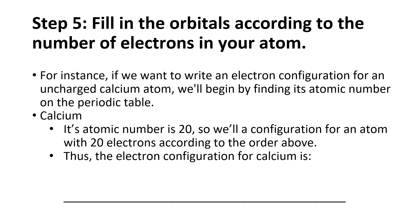Then you fill in the orbitals according to the number of electrons in your atom. So if you know that calcium, an uncharged calcium atom, has 20 electrons because the atomic number is 20, you just kind of fill out the electron configuration. So 1s2, 2s2, 2p6, 3s2, 3p6, 4s2. 2, 2, so that's 4, plus 6 is 10, 12, 18, 20. There you go. We're good.